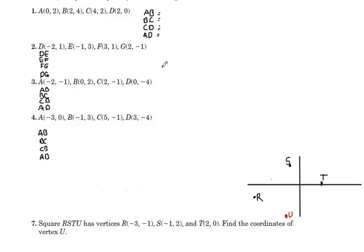Hello, everybody. We're going to do a few examples here to determine what kind of quadrilaterals we have given these coordinates. We'll do numbers 1 through 4 here, and then we'll be looking for a vertex on number 7.